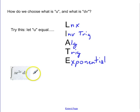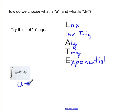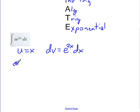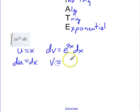Let's look at this next example. According to LIATE, we should let u equal x, which means dv is everything else: e to the 2x dx. And du will equal dx.